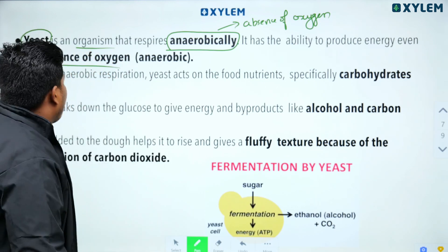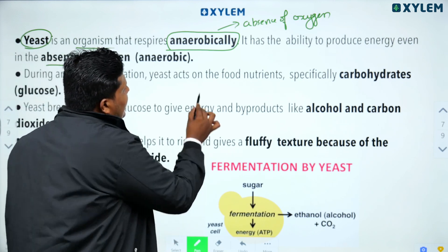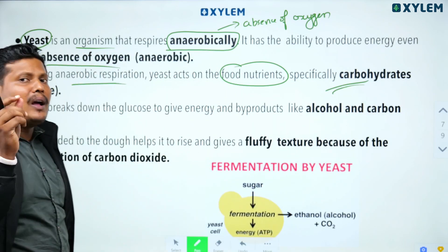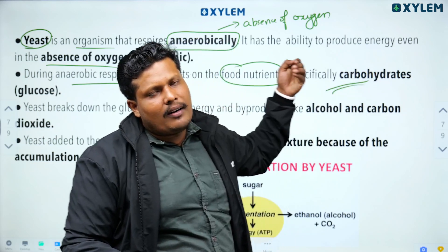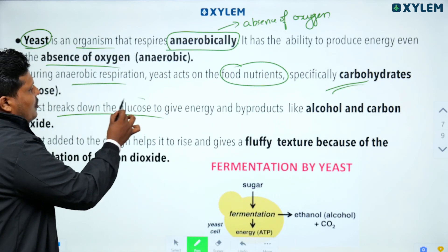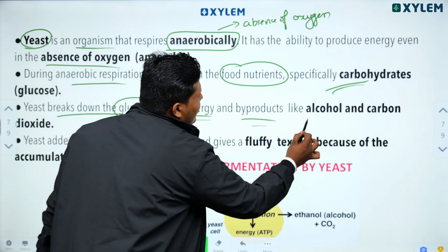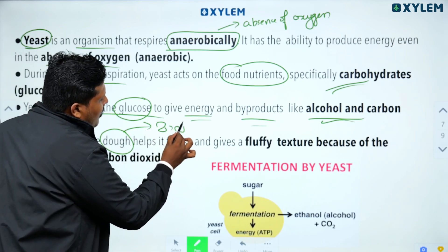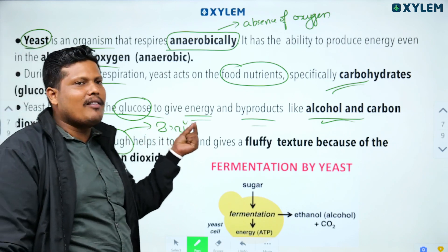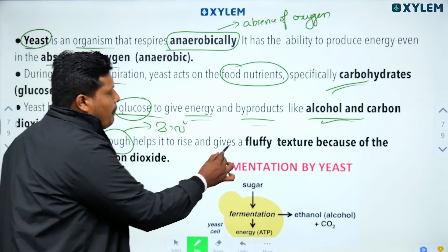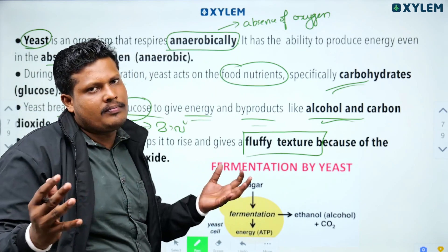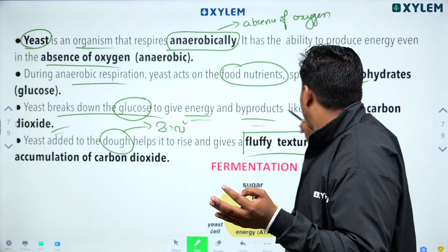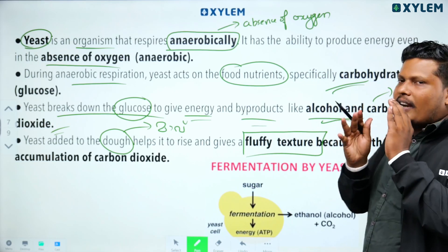Yeast is an organism that respires anaerobically — in the absence of oxygen. It has the ability to produce energy even without oxygen. During anaerobic respiration, yeast acts on carbohydrates, breaking down glucose to give energy and byproducts like alcohol and carbon dioxide. When yeast is added to dough, the carbon dioxide produced gives it a fluffy texture.